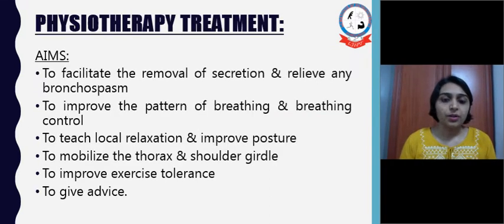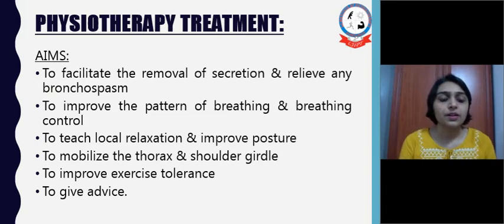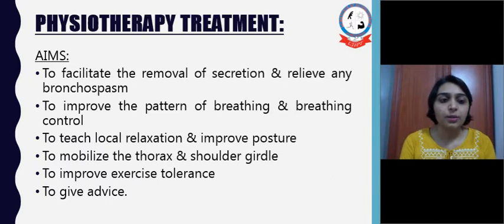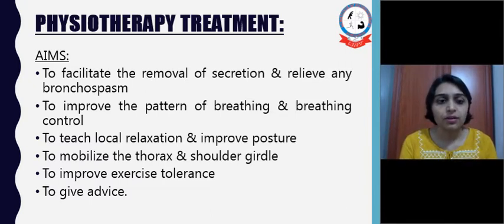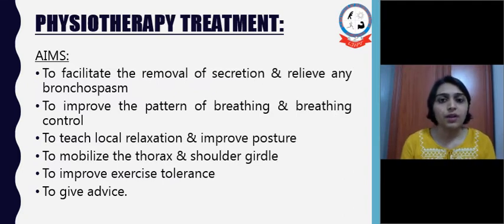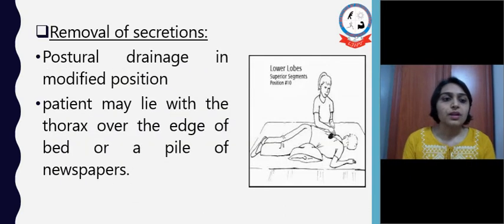Next is physiotherapy treatment, which will start with the aims to be considered. First is to facilitate removal of secretions and relieve any bronchospasm. Second is to improve pattern of breathing and breathing control. Third is to teach local relaxation and improve posture. Fourth is to mobilize the thorax and shoulder girdle. Fifth is to improve exercise tolerance. And last is to give advice to the patient.